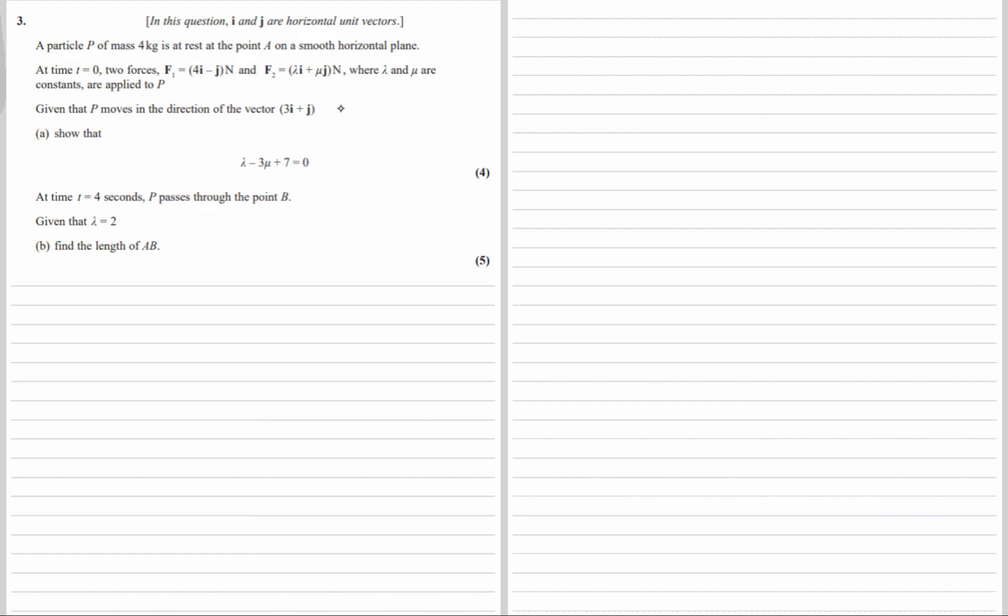So these two forces added together, their resultant force must be in the direction of 3i plus j. I'm going to write these as columns. I'm going to have 4 minus 1 plus lambda mu, and that's some multiple, let me use x, x times 3, 1. So then we can say the top line is 4 plus lambda equals 3x, and the bottom line negative 1 plus mu equals x.